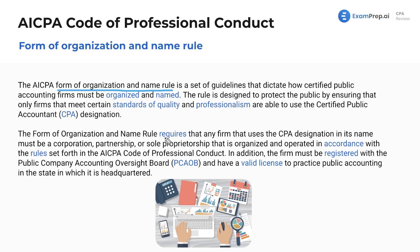The form of organization and name rule requires that any firm using the CPA designation in its name must be a corporation, partnership, or sole proprietorship that is organized and operated in accordance with the rules set forth by the code of conduct. In addition, you have to register with the PCAOB if you're dealing with public companies, and hold a valid license for public accounting practice in the state where the firm is headquartered.